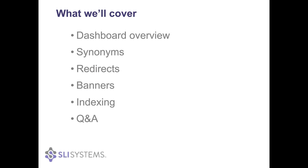What we're actually going to be covering today is very much entry-level, high-level overview of the merchandising console. The specific areas we're going to focus on: the top-level dashboard, tune results, synonyms and how to set them up, redirects, adding banners to your search result pages or any SLI-hosted pages, a look through the indexing setup — how we ingest the data you provide and return that as searchable content — and then the Q&A section.